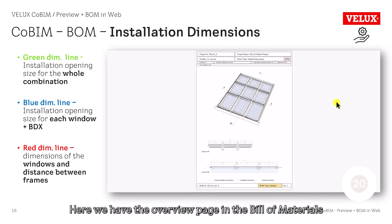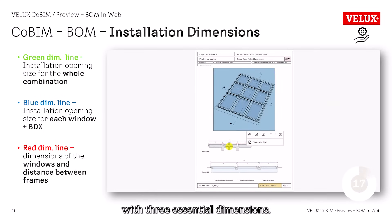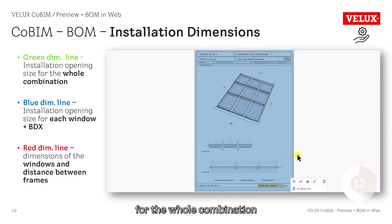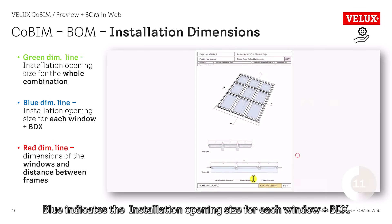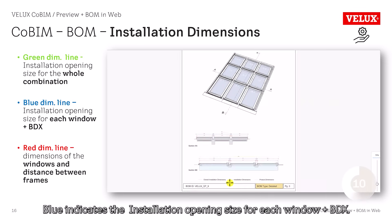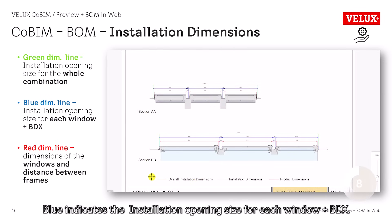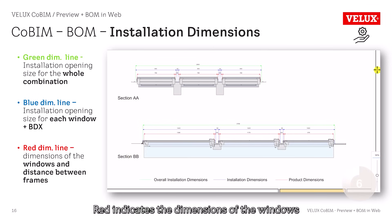Here we have the overview page in the Bill of Materials with three essential dimensions. The green one indicates the installation opening size for the whole combination. Blue indicates the installation opening size for each window plus BDX. Red indicates the dimensions of the windows and the distance between window frames.